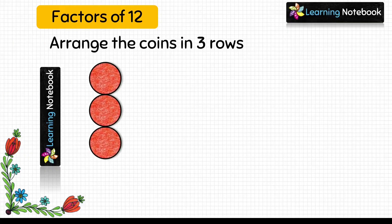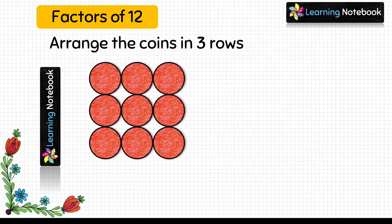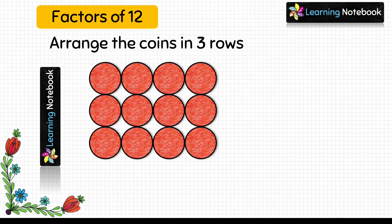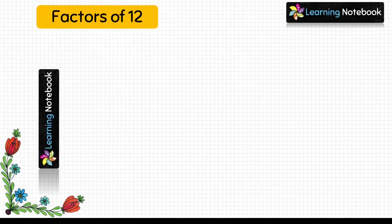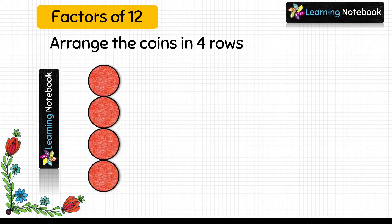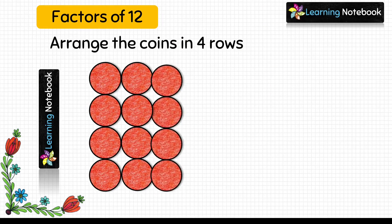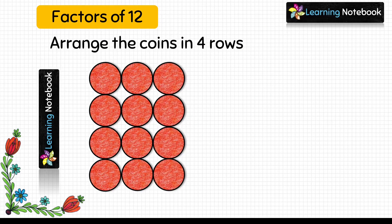Then we will arrange these coins in 3 rows — so each row has 4 coins, and this arrangement can be expressed as 3 into 4. Next, we will arrange these coins in 4 rows, so each row has got 3 coins. So this arrangement can be expressed as 4 into 3.